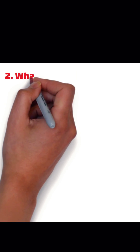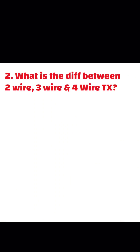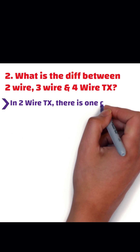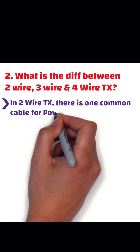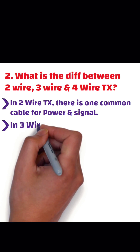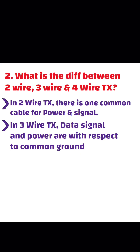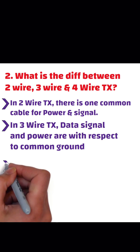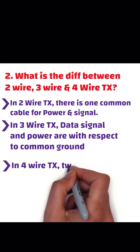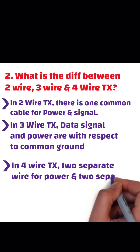The second question is: what is the difference between a two-wire, three-wire, and four-wire transmitter? In a two-wire transmitter, there is one common cable for both power and signal. In a three-wire transmitter, the data signal and power are with respect to a common ground. In a four-wire transmitter, there are two separate wires for power and two separate wires for signal.